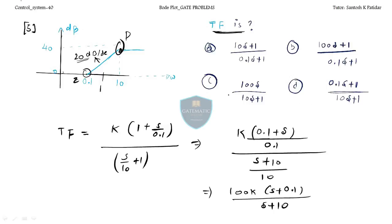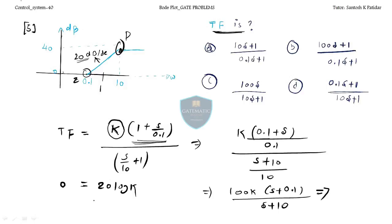Now calculate K. At frequency 0.1, the magnitude is 0 dB, so 20 log(K) = 0, which means K = 1. With K = 1, the transfer function becomes 100(s + 0.1)/(s + 10).